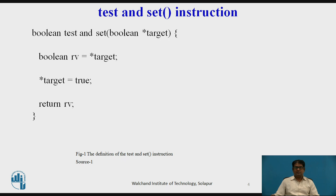Many modern computer systems therefore provide special hardware instructions that allow us either to test and modify the contents of a word, or to swap the contents of two words atomically — meaning as one uninterruptable unit. We are going to use these special instructions to solve the critical section problem in a relatively simple manner.